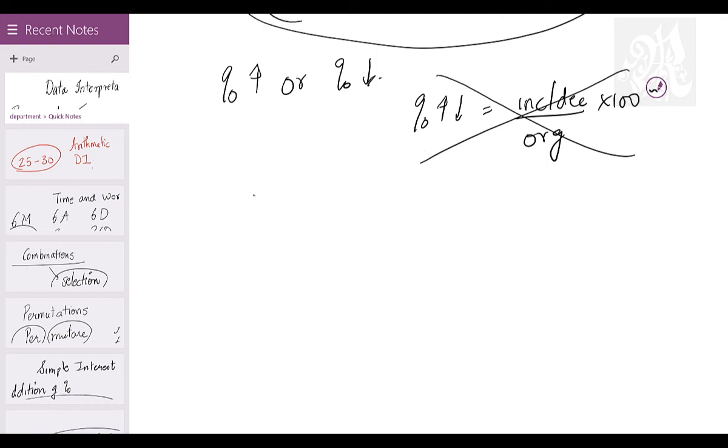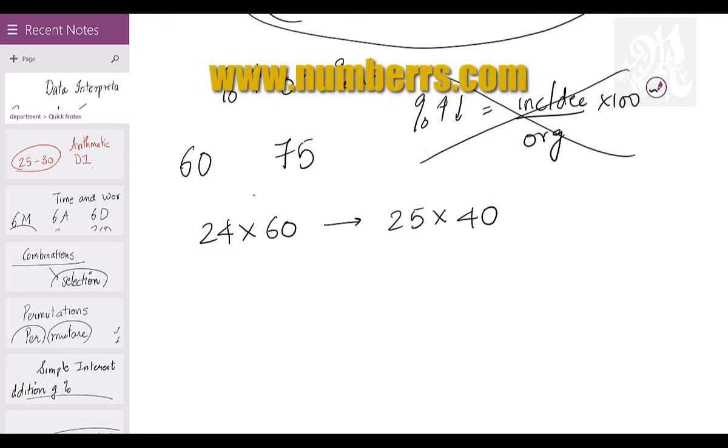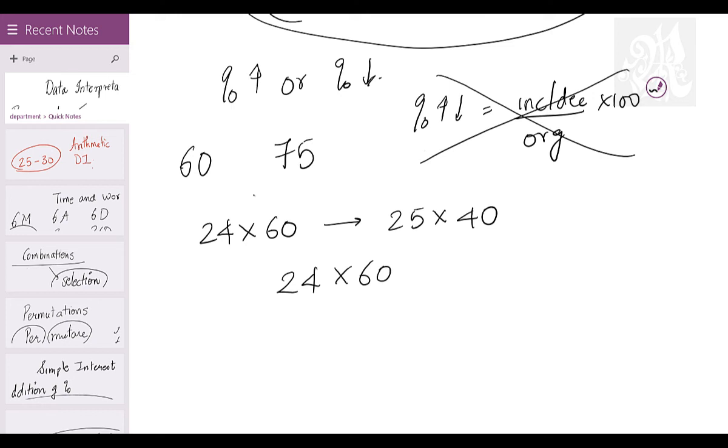Because in a topic like DI, you will not have a percentage increase like this: find out what percentage increase is from 60 to 75. Don't expect this question. You'll have a percentage increase like this: earlier it was 24 into 60, now it is 25 into 40, find the percentage increase or decrease. Never multiply these things and find out. Just do one simple thing. Keep in mind, keep original and final, it's on you. You know this is the original, you know this is the final. You can keep them in the numerator or denominator, the choice is yours completely.